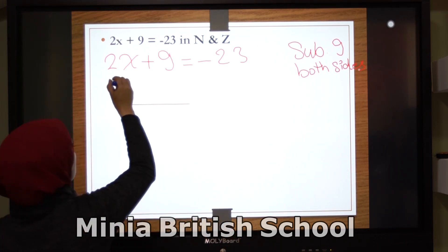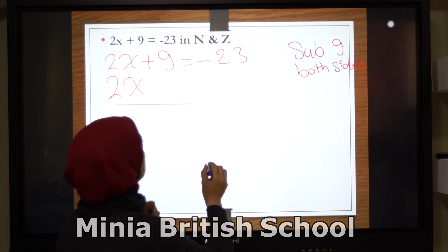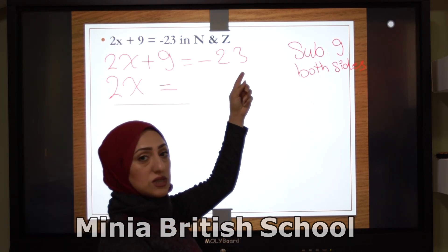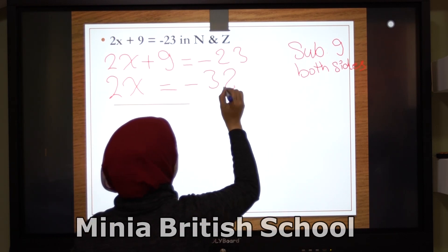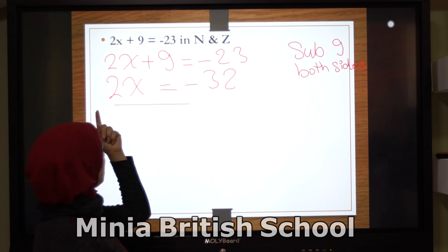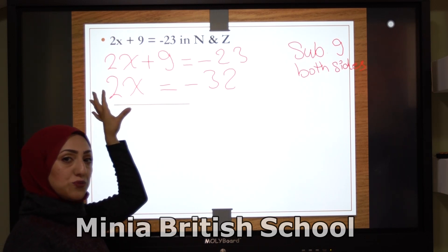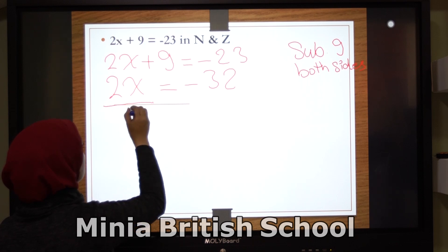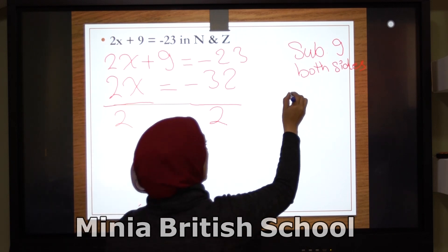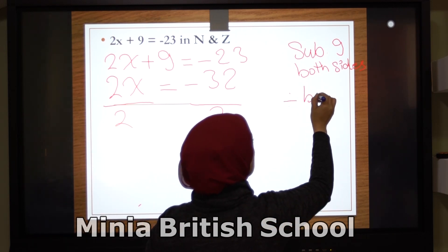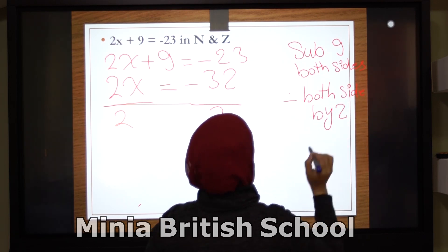Here: 2x plus 9 equals negative 23. First of all, I subtract 9 from both sides. It will be 2x, and the negative 9 becomes 0. On the right side: negative 23 minus 9 equals negative 32. The result is 2x equals negative 32. Now I want to get rid of the 2. How? By dividing by 2.